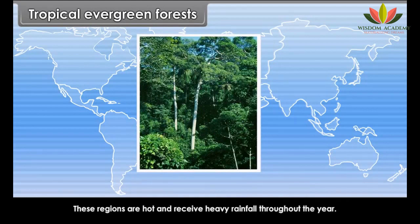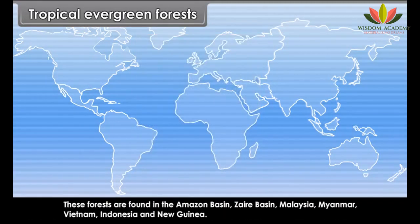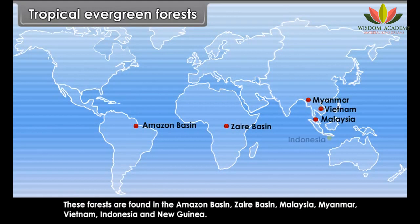These regions are hot and receive heavy rainfall throughout the year. As there is no particular dry season, the trees do not shed their leaves altogether — this is why they are called evergreen. These forests are found in the Amazon basin, Zaire basin, Malaysia, Myanmar, Vietnam, Indonesia and New Guinea.